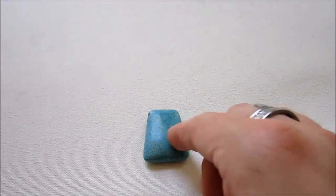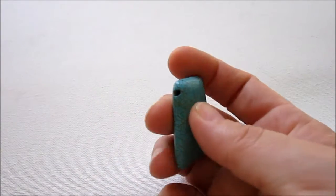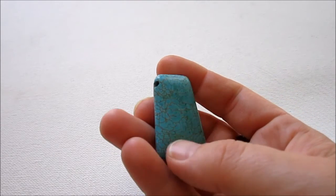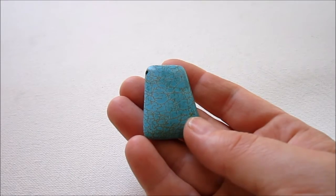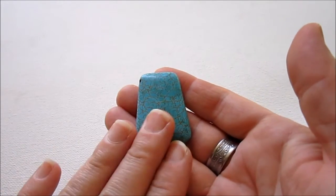So for this project you'll need a big chunky focal bead. I'm using this turquoise bead. It's side drilled, which is helpful for this particular pendant I'm going to show you.